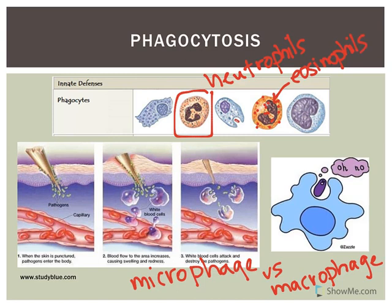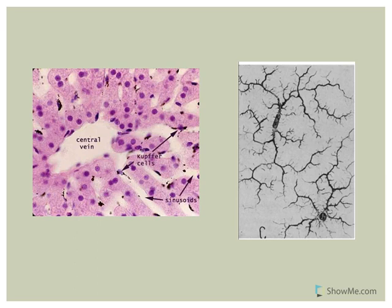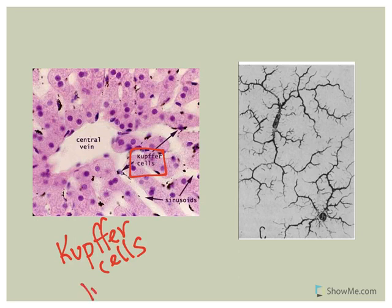We also have monocytes — here's a monocyte. Monocytes give rise to macrophages. In tissues, monocytes will develop into macrophages that will engulf things. We have what we call fixed or free macrophages. Some special names for macrophages: we have Kupffer cells, which are macrophages specifically located within the liver, found lining the sinusoidal capillaries within the liver.